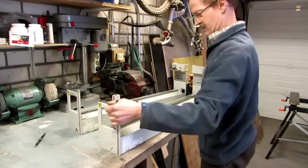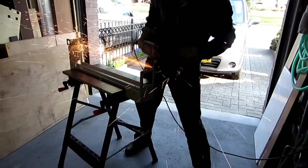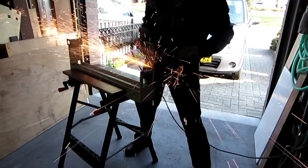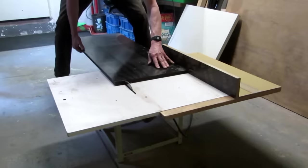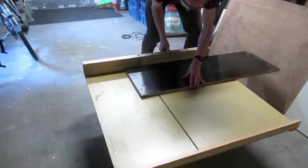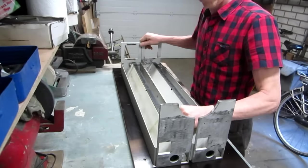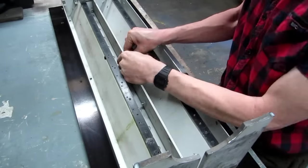The lathe bed was made from two arms that came off a scrapped pick and place machine. Of course some cutting and drilling was needed. The floorboard was made from 18mm high grade multiplex. The arms are bolted together and then bolted onto the floorboard.